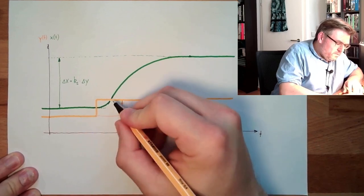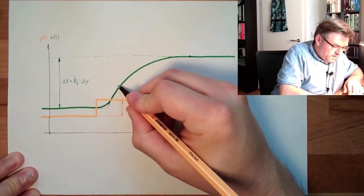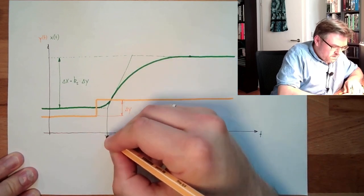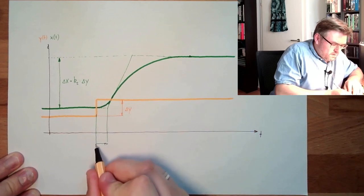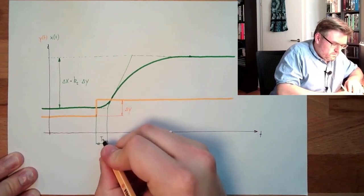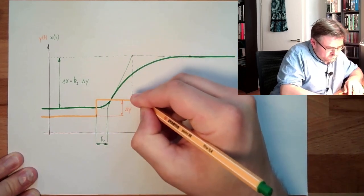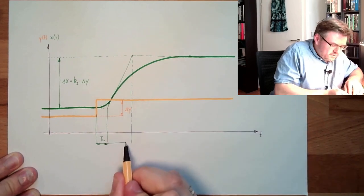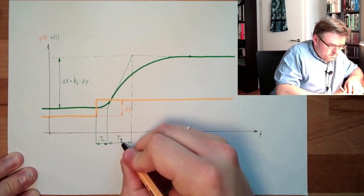So this is the gain factor of the system. And here we usually have a point of inflection. There is also an inflection tangent. Then we can give here a delay time, usually called TU, and here we have a rise time, TG.